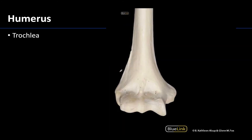Moving to the distal humerus: you will have the spool-shaped trochlea, which serves as an articulation site for the trochlear notch of the ulna, forming the humeral-ulnar joint. This is the true elbow joint, even though it is very closely associated with other joints in this region.